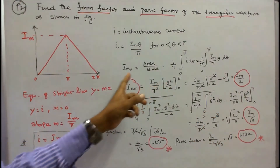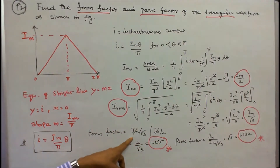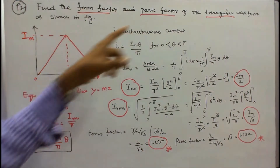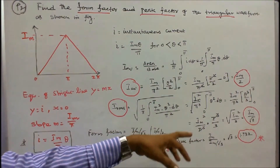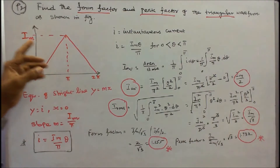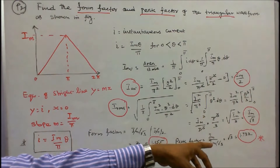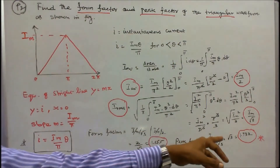Knowing I_average and I_rms, form factor = I_rms / I_average = (I_m / √3) / (I_m / 2) = 2/√3 = 1.155. Peak factor = I_maximum / I_rms = I_m / (I_m / √3) = √3 = 1.732. The form factor of a triangular waveform is 1.155 and the peak factor is 1.732.